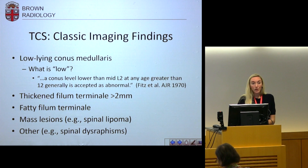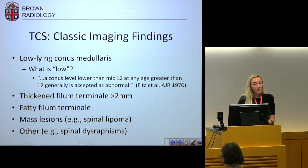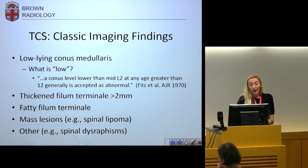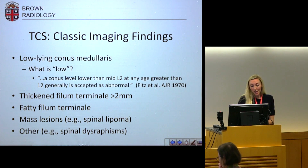Classically, when we look for tethered cord syndrome we're looking for specific things: low-lying conus. We started this project and began to question what is 'low.' In neuroradiology, we consider anything lower than L2 at any age greater than 12 years old to be generally accepted as abnormal — this was published initially in 1970 and has been reiterated throughout the literature since. A thickened or fatty filum is also abnormal; there was agreement at the meeting that anything greater than two millimeters is thick. Mass lesions or other bony abnormalities are also things we look for.